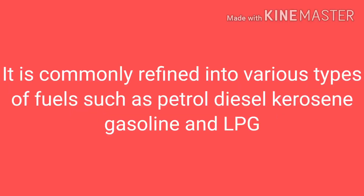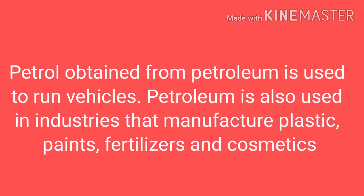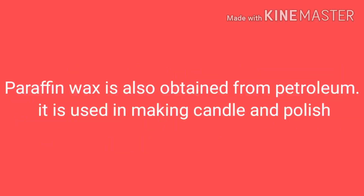Petroleum is a yellow to black liquid found beneath the earth's surface. It is commonly refined into fuels such as petrol, diesel, kerosene, gasoline and LPG. Bombay High on the Mumbai coast and Digboi in Assam are some places where petroleum is extracted in India. Petrol obtained from petroleum is used to run vehicles. Petroleum is also used in industries that manufacture plastic, paints, fertilizers and cosmetics. Paraffin wax is also obtained from petroleum and is used in making candles and polish.